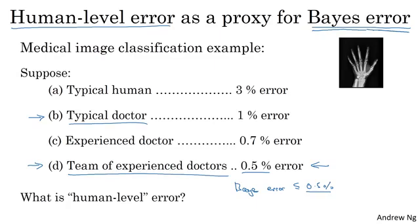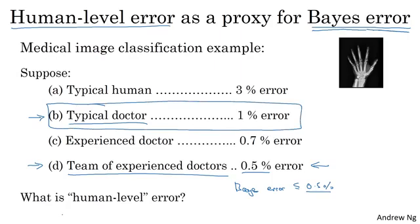So maybe the takeaway from this is to be clear about what your purpose is in defining the term human-level error. If it is to show that you can surpass a single human and therefore argue for deploying your system in some contexts, maybe this is the appropriate definition. But if your goal is the proxy for Bayes error, then this is the appropriate definition.